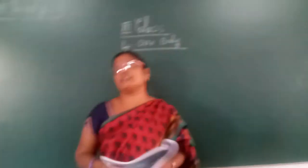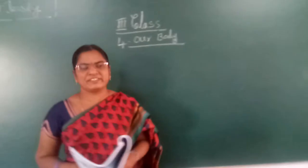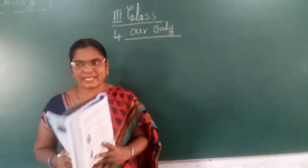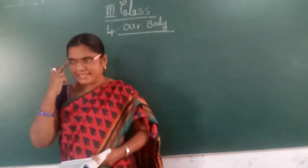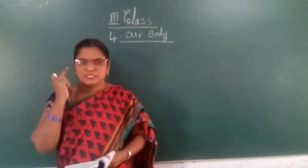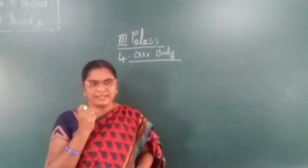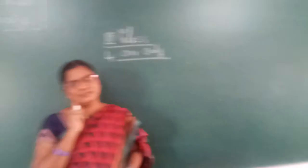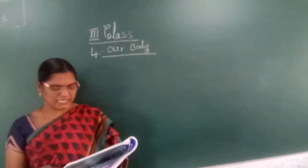We have five sense organs. We have five sense organs. What are they? Eyes, nose, ears, tongue, and skin — five sense organs.